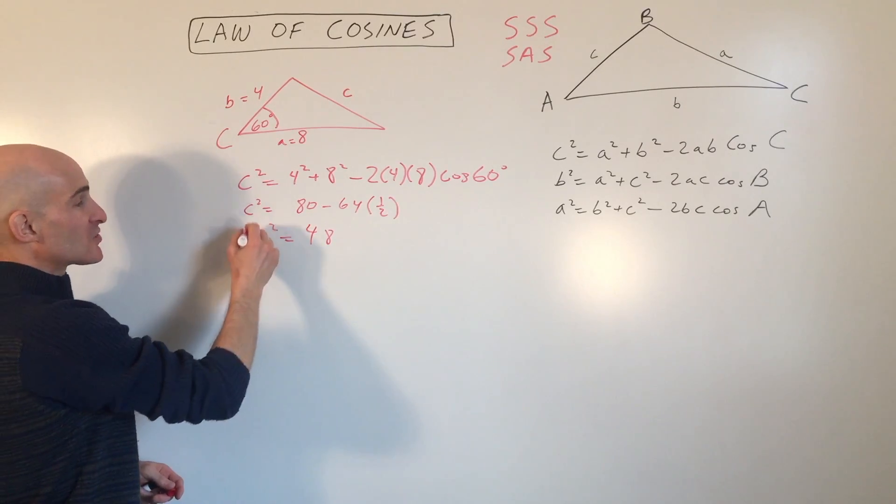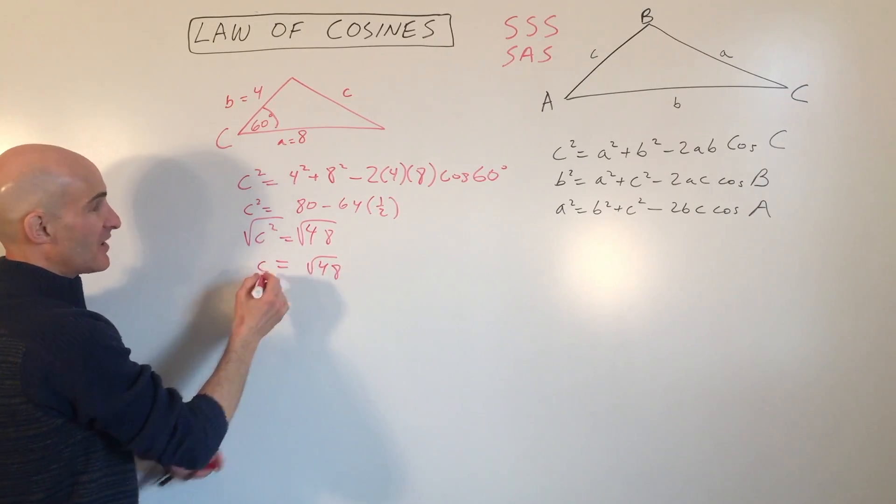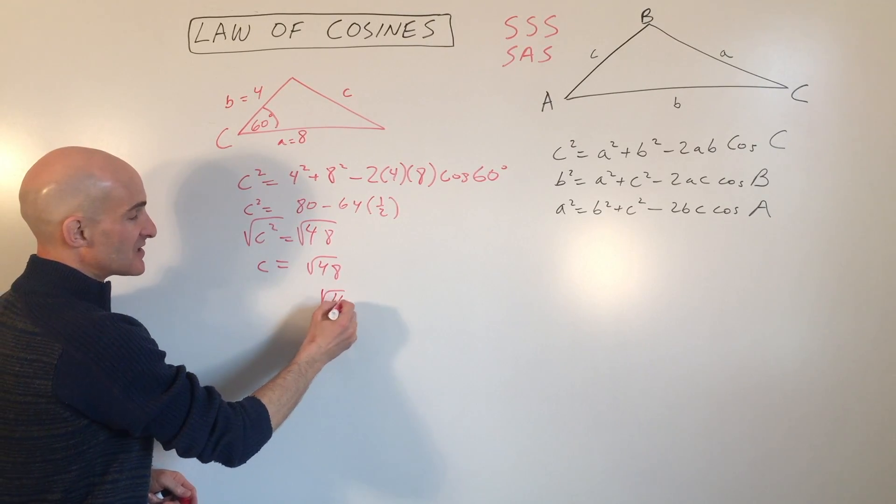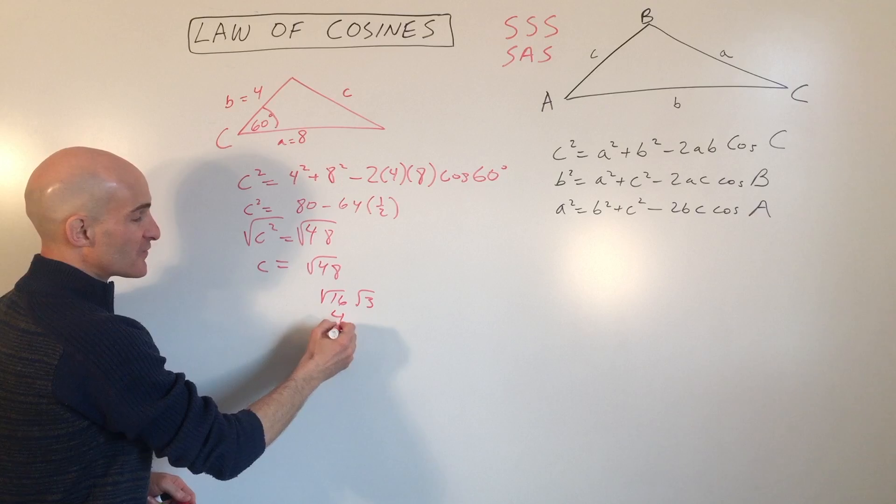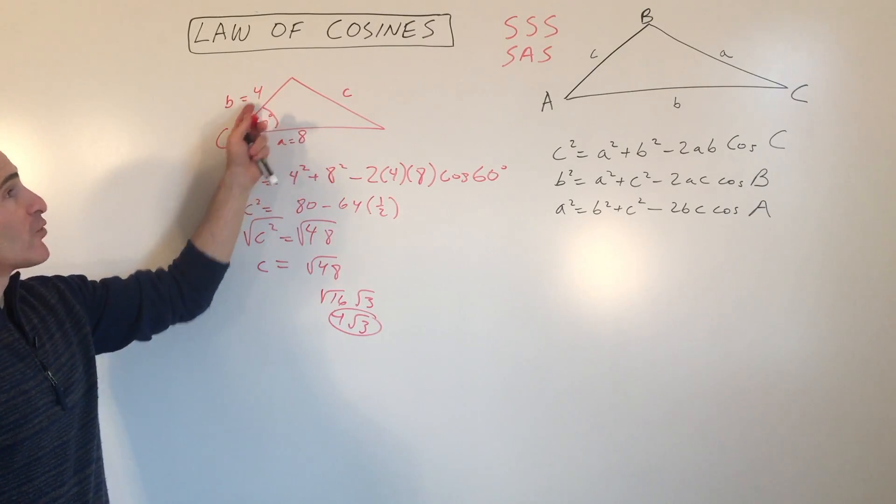And if we take the square root of both sides, we get the square root of 48. And that's going to be the length of this side. And you can simplify this a little bit more. This is 16 times 3, which is 4 square root of 3. So that's an example where you have side angle side.